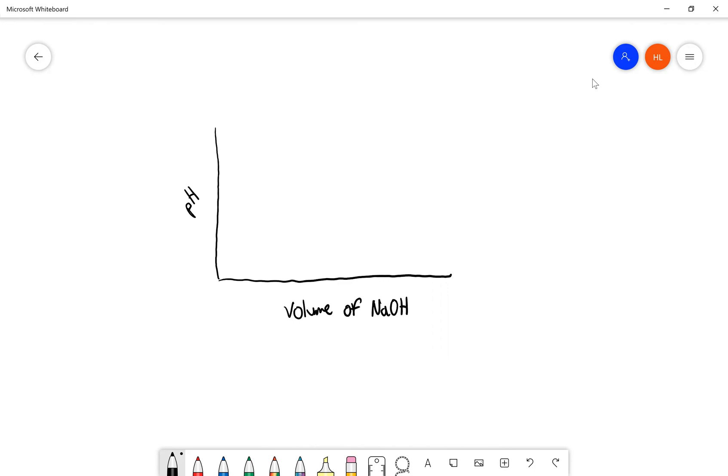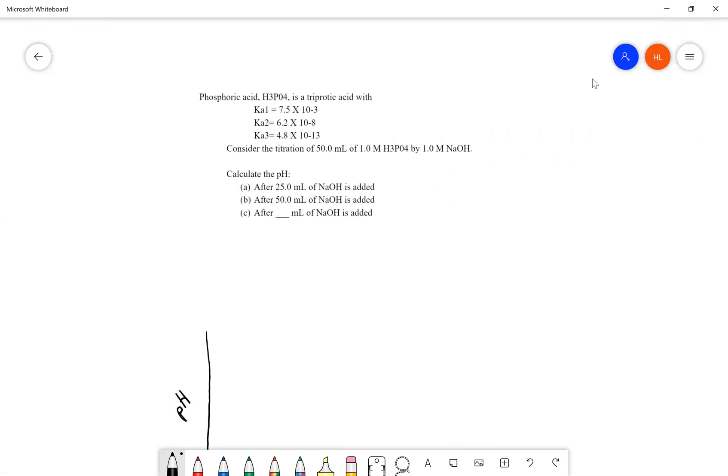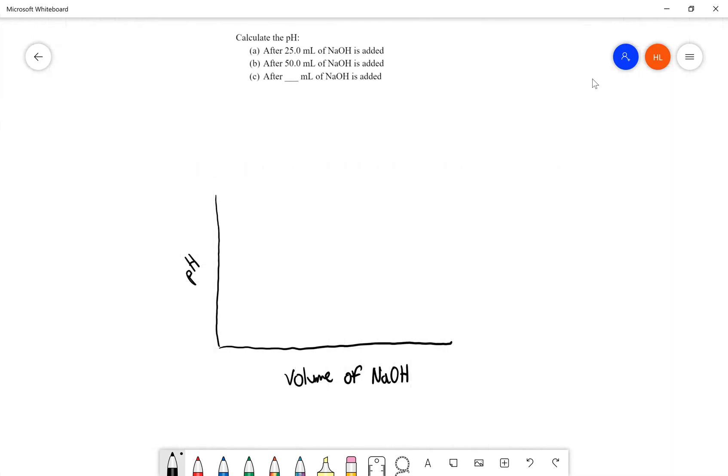So since we know this is an acid, we know that the pH is going to start low, and since we see that there are three values of Ka, that means it has a stepwise dissociation three times. So we're going to have three different buffer regions and three different midpoints. I'm going to put this on the graph. Let's start low, have one buffer region, one equivalence point, a second buffer region, a second equivalence point, and a third buffer region.